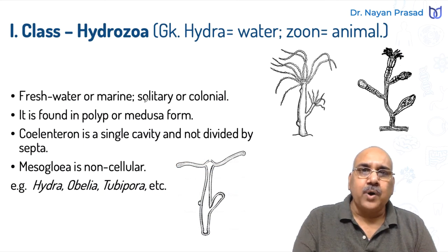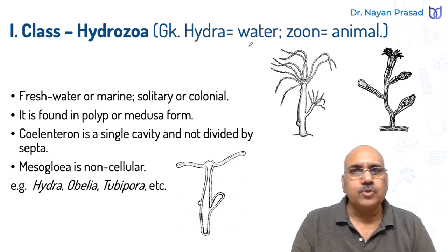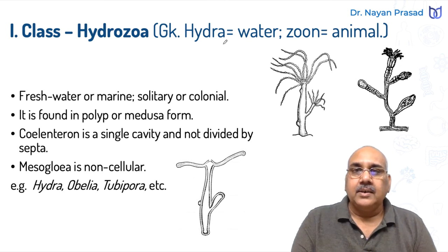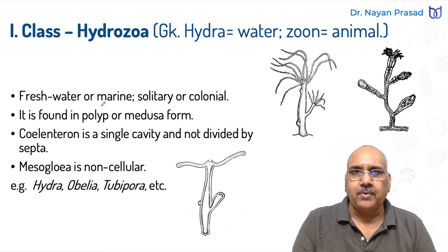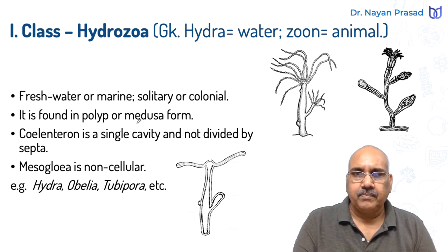Class Hydrozoa — the term comes from Greek language in which 'hydra' means water and 'zoon' means animal. So these are water forms with tubular body normally. The members are freshwater or marine; both types of individuals are found. They may be solitary or colonial. These are found in polyp form or medusa form — polyp has a tubular body, medusa has an umbrella-shaped body.